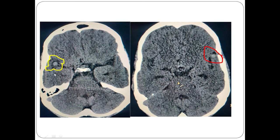What we see here: there is a well-defined rounded hyperdense lesion in the right sylvian fissure along the course of the middle cerebral artery. A similar lesion is seen on the left side, but with irregular margins, also seen in the left sylvian region.